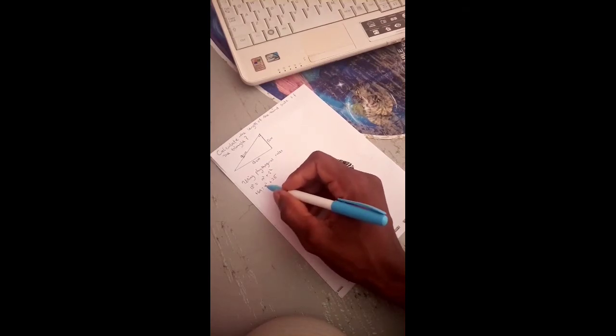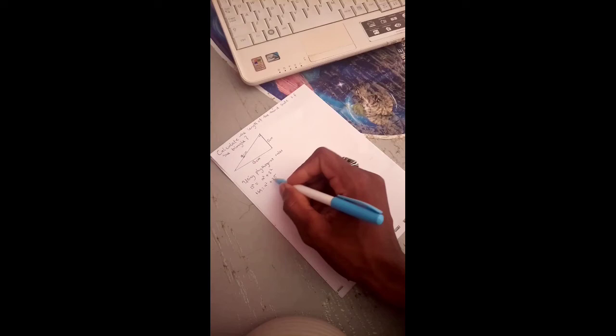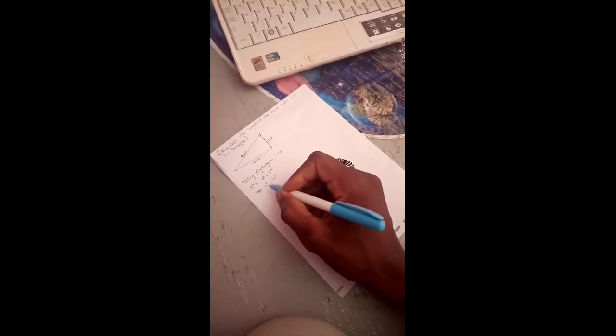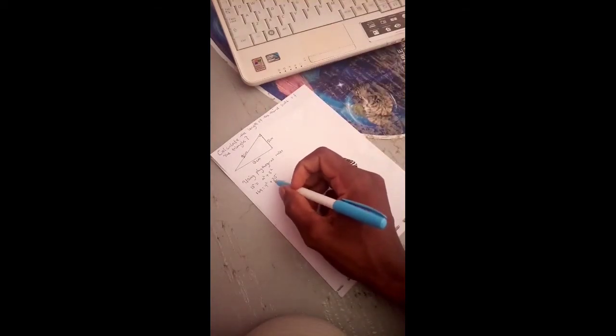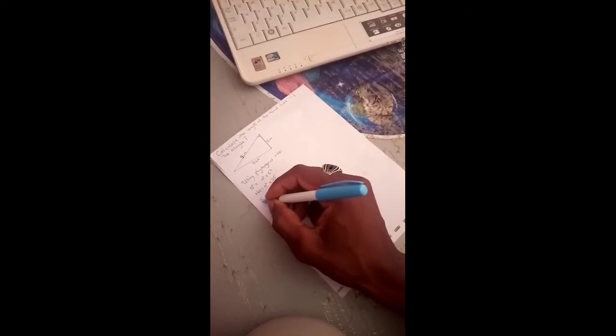From here we have a squared plus 25. We are finding a squared. How are we going to eliminate this 25? We are going to subtract 25 from both sides.